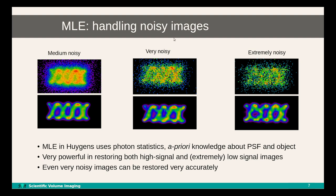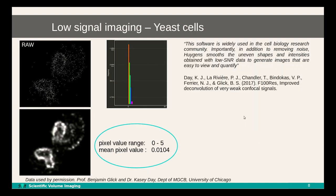This slide shows the same simulated dataset with various different levels of noise. It is especially impressively shown how a very noisy image on the right can still be restored to the underlying object. To illustrate the power of MLE on actual measured biological images, here is an extremely low signal confocal image where the maximum intensity consists of just a few photon counts. Huygens is widely used in the cell biology research community. Importantly, in addition to removing noise, Huygens smoothens the uneven shapes and intensities obtained with low signal-to-noise ratio data to generate images that are easy to view and quantify.